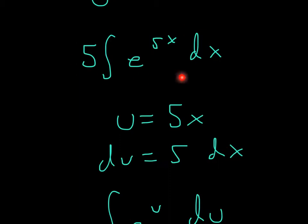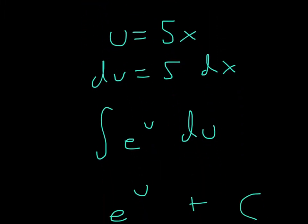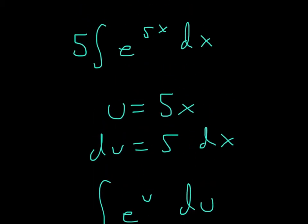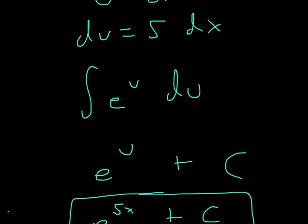So is there a 5 in this entire function? Well yeah, it's right here. Okay, so I can represent that as e to the u, because du represents 5 dx in the original one, and u represents 5x also in the original one, so we have everything covered.